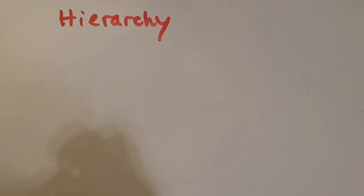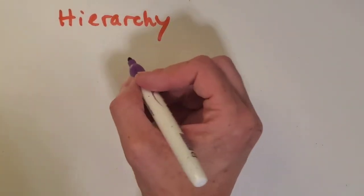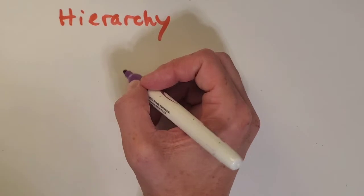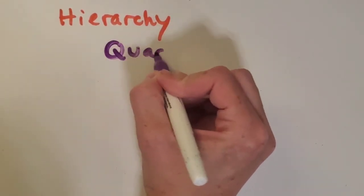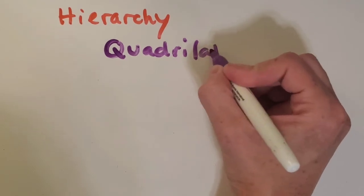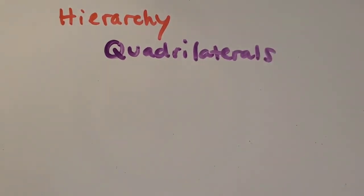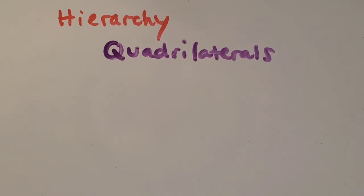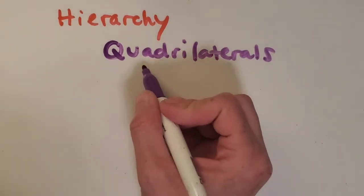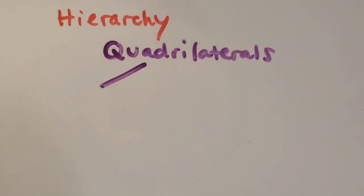Now we're going to think about a hierarchy for classifying shapes, and we're going to be classifying quadrilaterals. At the beginning of the video I mentioned that these are four-sided shapes, so that's the most broad or general description. There are lots of shapes with four sides, and we need to get more and more specific as we go down this hierarchy. Let's think about some different branches or types of quadrilaterals.